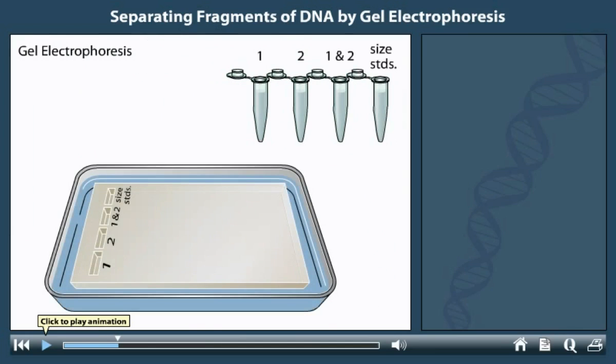Gel electrophoresis is one of the most useful means of separating and purifying DNA fragments for further analysis. In this technique, a jello-like slab of material called agarose is molded with wells, placed in a buffer solution and hooked up to positive and negative electrodes.